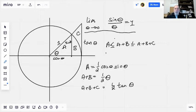So we'll have cosine of theta times the sine of theta is less than or equal to theta itself, which is less than or equal to the tangent of theta.